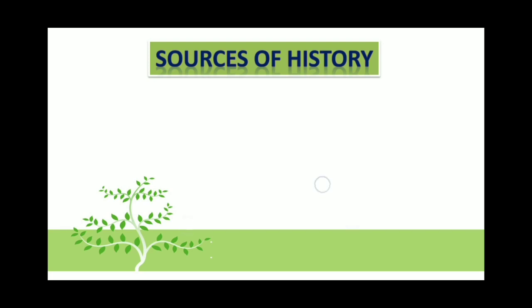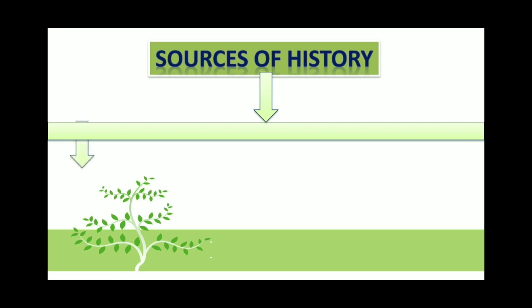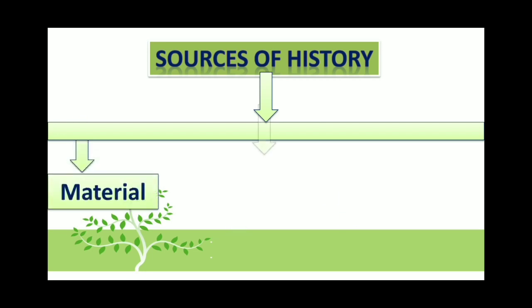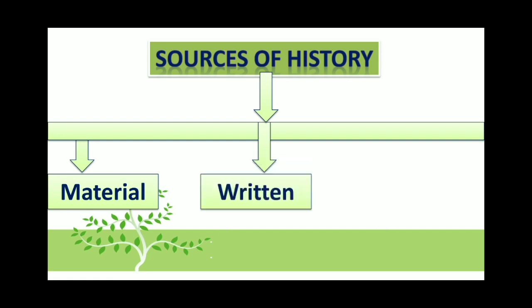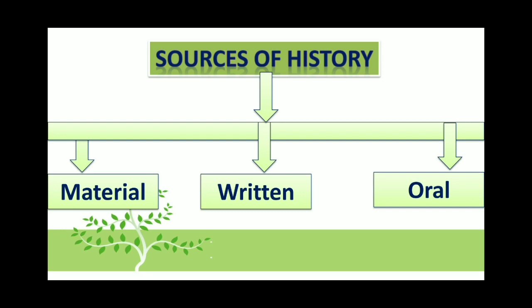Sources of history are basically divided into three types: material sources of history, written sources of history, and oral sources of history. We will study in detail about material, written, and oral sources.